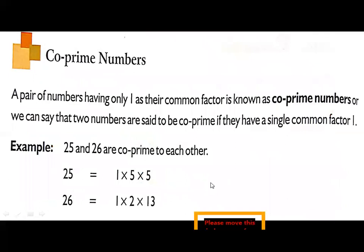And last type of number is co-prime numbers. The definition of co-prime number is as follows. A pair of numbers having only 1 as their common factor is known as co-prime numbers, or we can say that two numbers are said to be co-prime if they have single common factor 1.